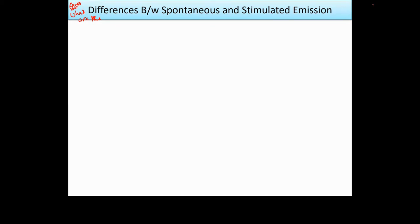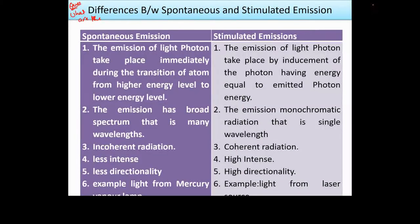There is another difference: ordinary light is non-coherent and has a broad spectrum, meaning many wavelengths exist within it. When it is stimulated emission, there is monochromatic light — a single wavelength — and it is highly intense light.